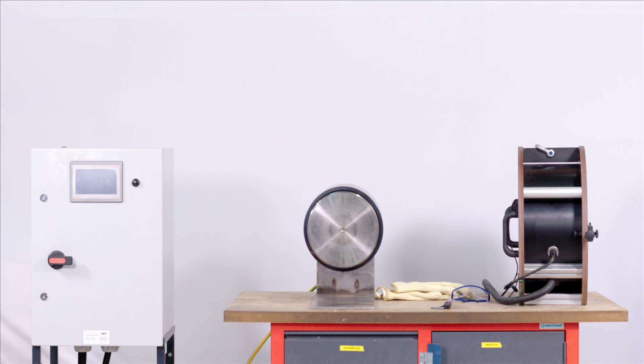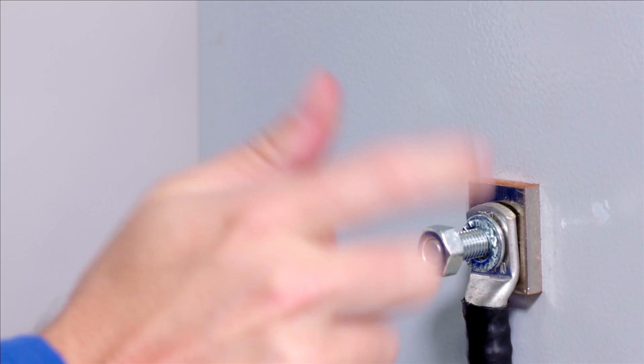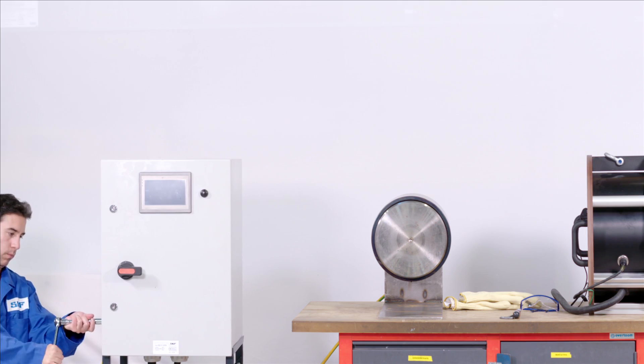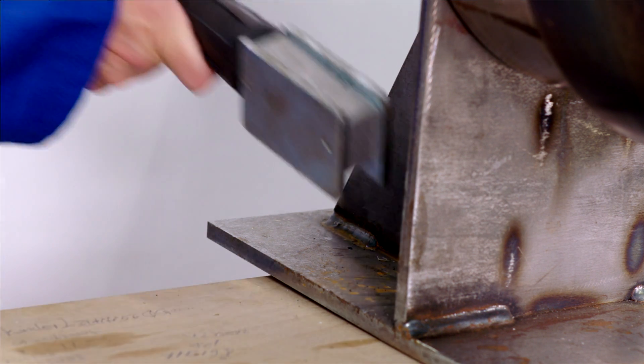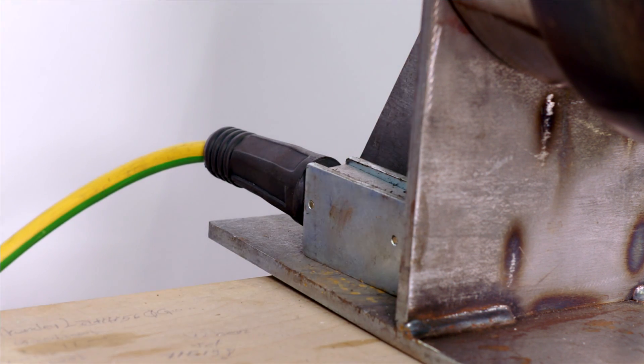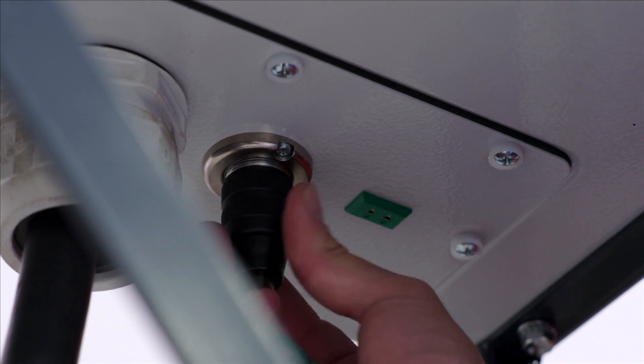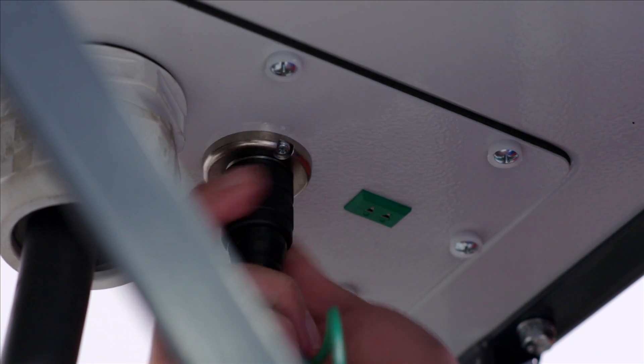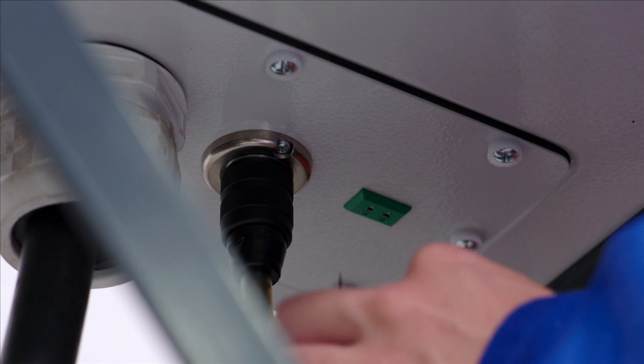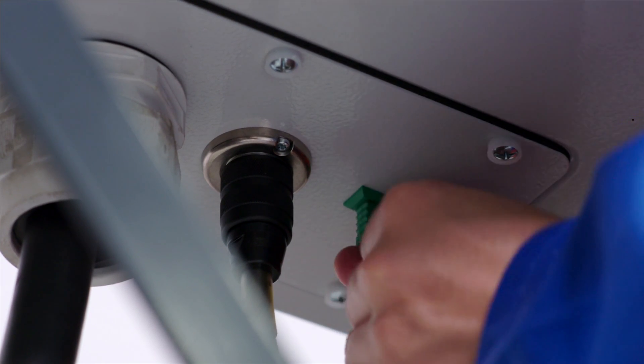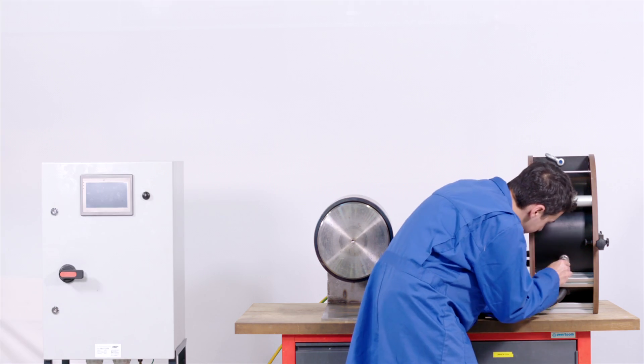Now earth the shaft by connecting the grounding cable to the control cabinet box. Then connect the magnetic clamp to the shaft. Connect the control cable to the box, and then the temperature probe extension cable to the cabinet. Now connect the control cable to the heater.